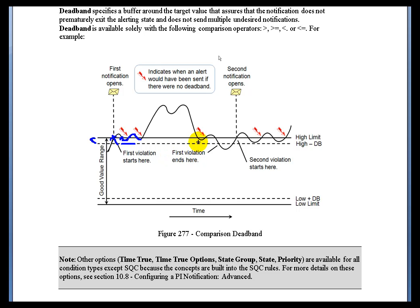This is how we specify Deadbands and Notifications. It's a fairly common thing in Alarm Systems to support this. The end result in this particular case is that it's not until this point in time that we get an instance where, if it goes back into Alarm again, we're going to go ahead and send another Alarm Notification because now the Deadband has been crossed. So it's at this point that we do one more Alarm.